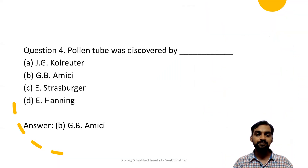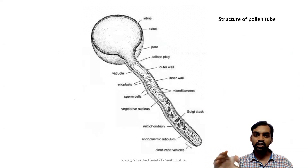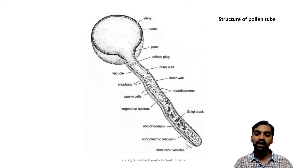Pollen tube was discovered by G.B. Amici. The pollen grain lands on the stigma and forms a pollen tube. The pollen tube contains a vegetative nucleus and sperm cells, which are the male gametes. It also contains vacuoles, mitochondria, Golgi apparatus, and clear tube vesicles.